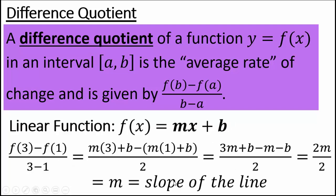Let's take a look at a generic linear function. In this case, f(3) would be m times 3 plus b, and f(1) would be m times 1 plus b. Do the algebra, and you'll see you end up with slope of a line.